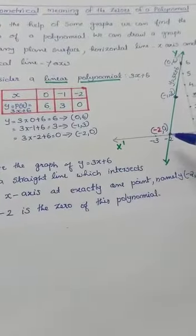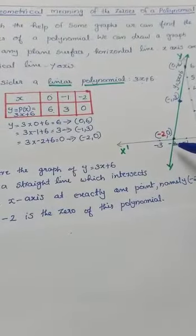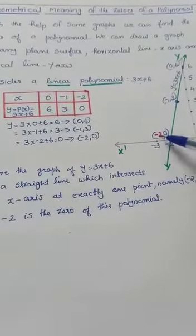This point is (-2,0). The x-coordinate of this point is called a zero of the polynomial.